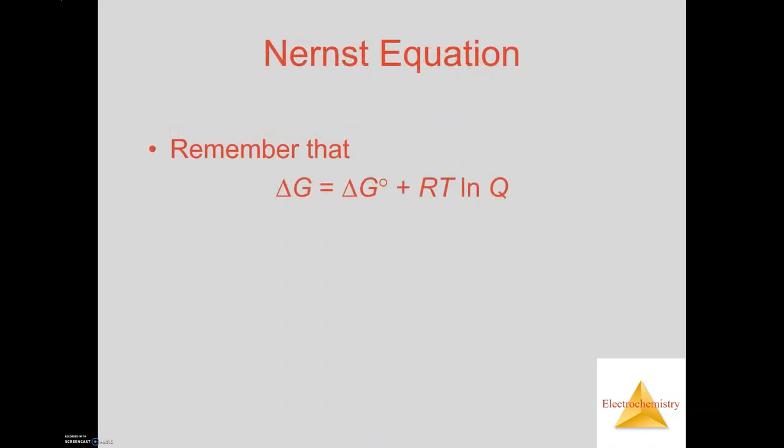Then we will end up having to use a different equation. So the equation we learned in the previous chapter was Delta G equals Delta G naught plus RT natural log of Q. What we're going to do with that equation is we're going to use that equation and what we just talked about in cell potential, how we related it in Faraday's constant. We're going to rearrange this equation into what is called the Nernst equation.